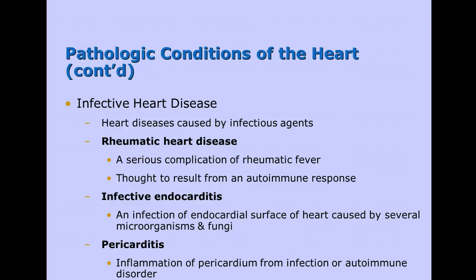Here are infective heart diseases, which can be caused by infectious agents. Rheumatic heart disease is a complication of rheumatic fever, which can be from a strep infection, or from an autoimmune response attacking the heart. Infective endocarditis is when a bacterial or fungal infection attacks the endocardial surface. Pericarditis is an inflammation of the pericardium from an infection or some type of autoimmune disorder.